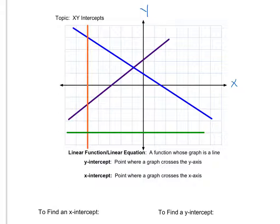Notice that every single line is going to have both an x and y intercept. However, if I have a vertical line, like the red line, or a horizontal line, like the green line — vertical lines are only going to have an x intercept, and horizontal lines are only going to have y intercepts. That's going to become very important later. Our goal is going to be to find these x and y intercepts, as they can be helpful in graphing an equation.